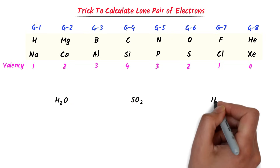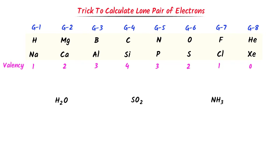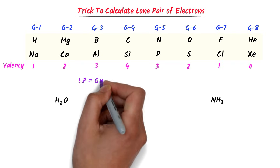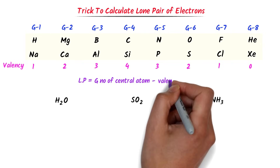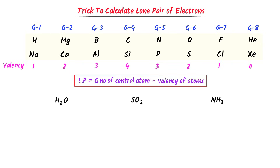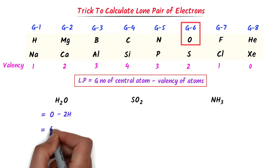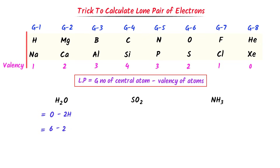Now consider these molecules and find the lone pair on the central atom. To find the lone pair, I use my personal formula: group number of central atom minus valency of surrounding atoms. For instance, in H₂O, oxygen is the central atom with 2 hydrogen atoms. The group number of oxygen is 6, minus 2 times the valency of hydrogen (1). I get 4 electrons, meaning there are 2 lone pairs on the central atom.